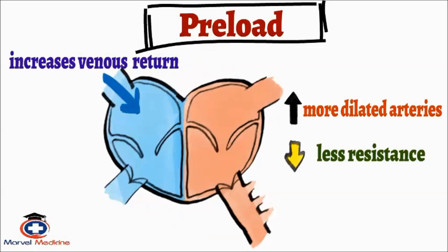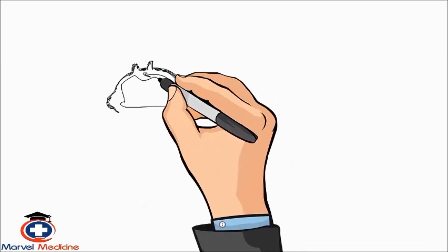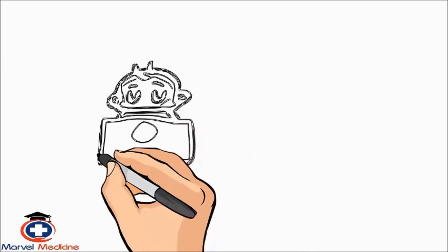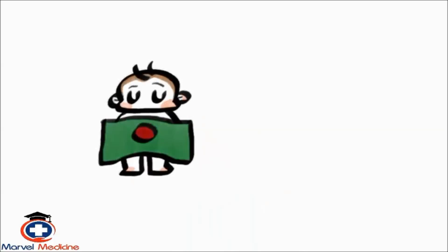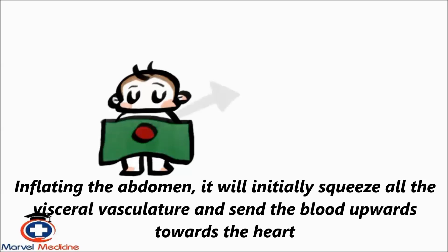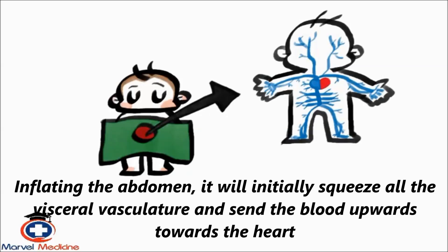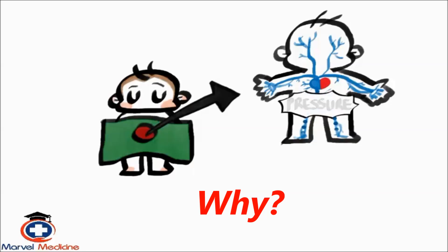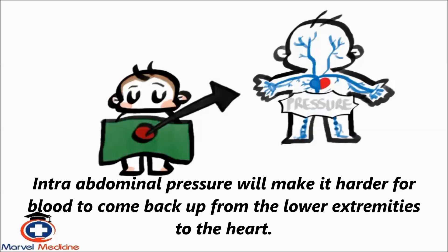Let's make sure we understand this concept with a question. Let's say I'm doing laparoscopic surgery and I inflate the abdomen with CO2, carbon dioxide — what would that do to my right atrial pressure? Since you're inflating the abdomen, it will initially squeeze all the visceral vasculature and send blood upwards towards the heart, so initially preload would increase. However, after some time, preload would decrease, because that intra-abdominal pressure will make it harder for blood to come back up from the lower extremities to the heart.